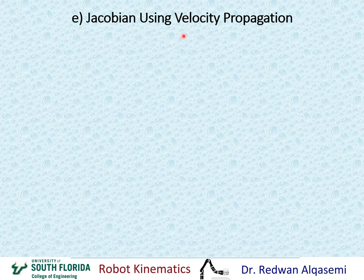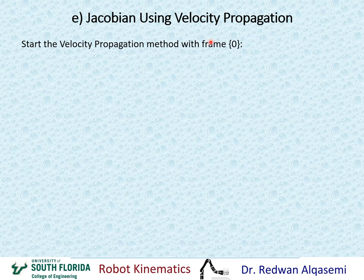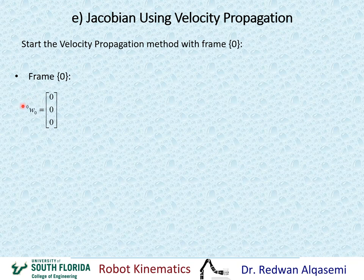We will now use the velocity propagation method to find the Jacobian. For this method we always start at frame 0, since we already know the ground frame velocities to be zeros. Starting from frame 0, we know the angular velocities of the ground are 0, 0, and 0, and the linear velocities of the ground are 0, 0, and 0 as well.